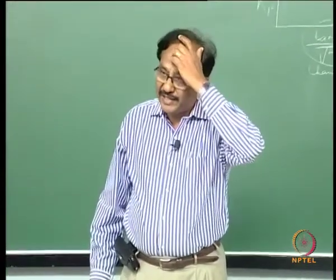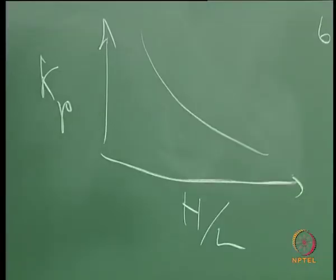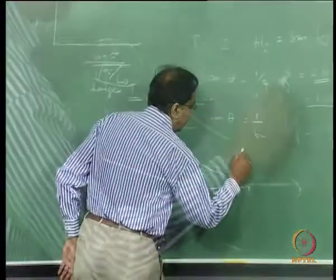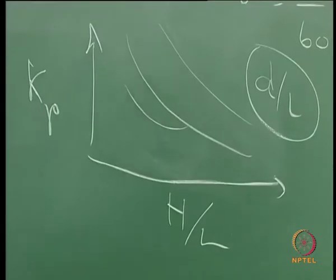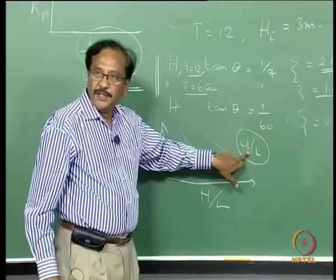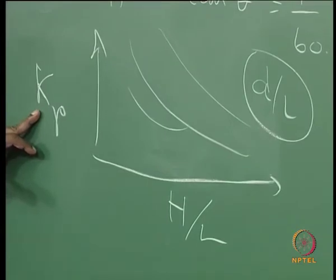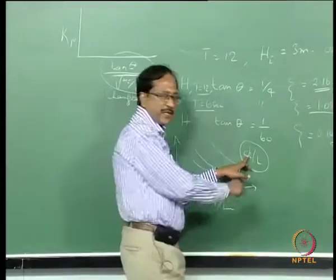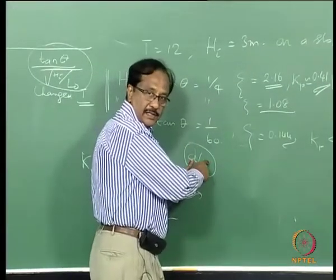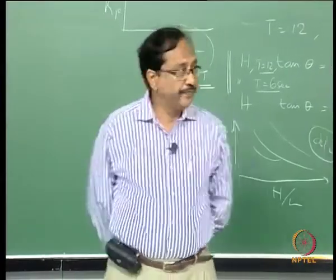As wave steepness increases, the reflection coefficient decreases. For a lesser D/L value, KR will be higher, because for a constant water depth subjected to a long period wave versus a short period wave, the reflection coefficient for long period waves is going to be higher.